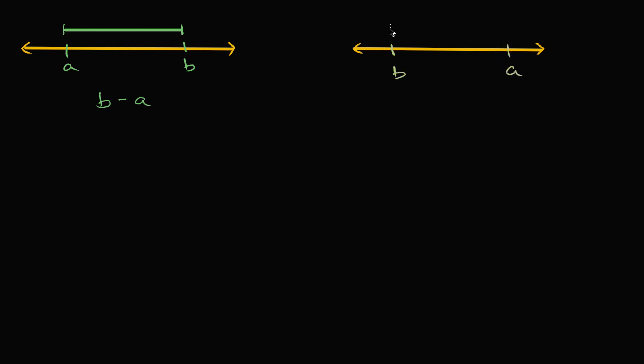So this is B. That is A. And if I wanted to calculate the distance between B and A here, well now I would take the larger of the two, A. Remember, I want the positive distance here. And then I would subtract out the smaller. I would do A minus B. Well, so here I did B minus A. Here I did A minus B.